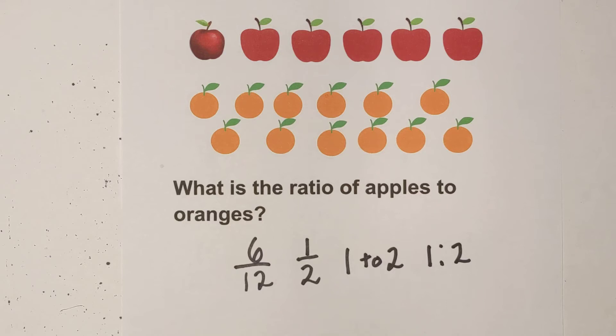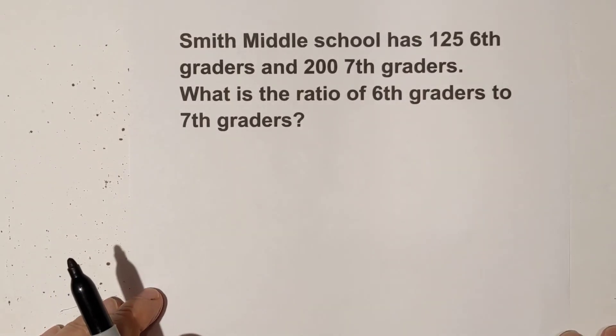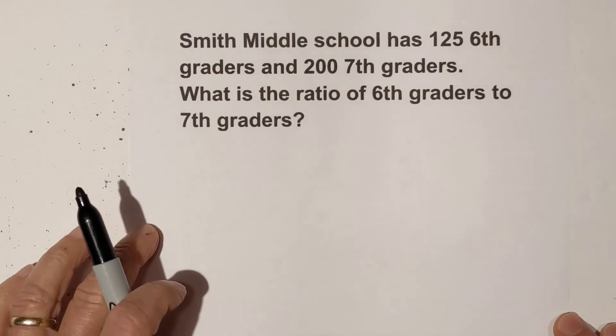Now let's work one that's a little bit more challenging, but it's the same concepts. Smith Middle School has 125 6th graders and 200 7th graders. What is the ratio of 6th graders to 7th graders?